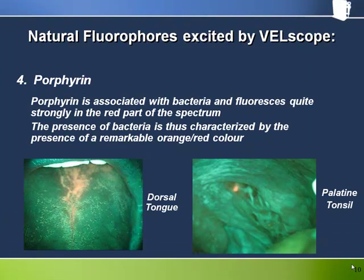Porphyrin is produced by bacteria and fluoresces quite strongly in the orange or red part of the spectrum when excited by blue light. The presence of bacteria is thus characterised by a remarkable orange-red colour, as can be seen in these images of bacteria giving off an orange glow from a tonsillar crypt and from some fissures on the dorsal surface of the tongue.